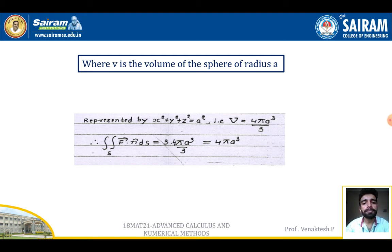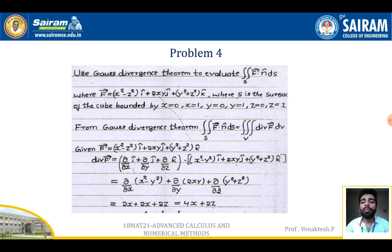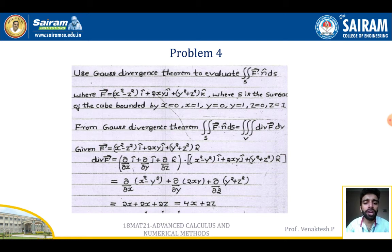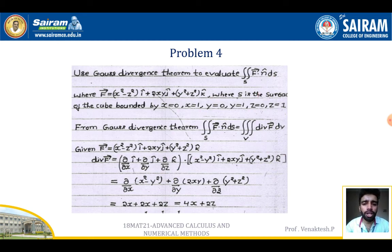Example 4: Use Gauss divergence theorem to evaluate ∬_S F·n dS, where F = (x²−z²)î + 2xy ĵ + (y²+z²)k̂, and S is the surface of the cube bounded by x=0, x=1, y=0, y=1, z=0, z=1. So x, y, z each vary from 0 to 1. The formula is ∬ F·n dS = ∭_V div F dV.